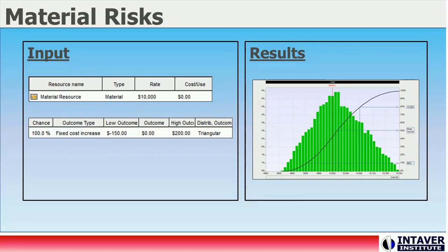Material costs are treated similarly to fixed costs when it comes to risk events. Material costs can be risked using the outcome type fixed cost increase; the relative cost increase outcome type does not work in this case. In this example, we can see how we can apply a range of possible rates for the material and its presentation on the chart. In addition, if you are using cost type resources, which are similar to material costs, cost type resources can be risked for each specific activity using the same method.